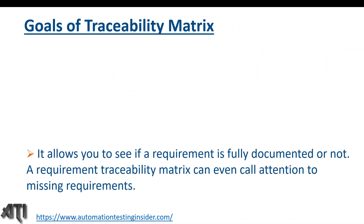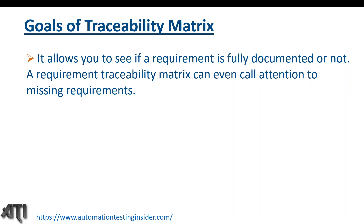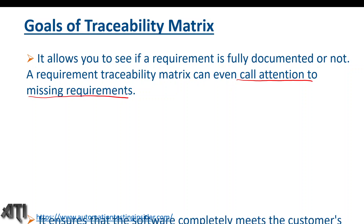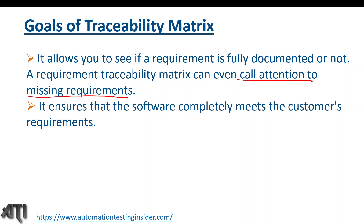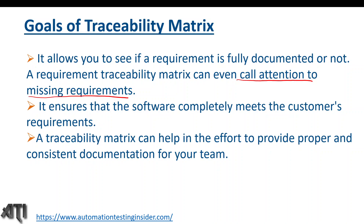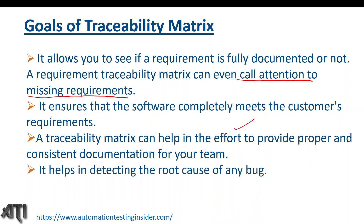The goals of a traceability matrix include: allowing you to see if a requirement is fully documented or not, and it can call attention to missing requirements. It ensures that the software completely meets the customer requirements. It also helps in providing proper and consistent documentation for the team, and helps in estimating the effort. Additionally, it helps in detecting the root cause of any bug.